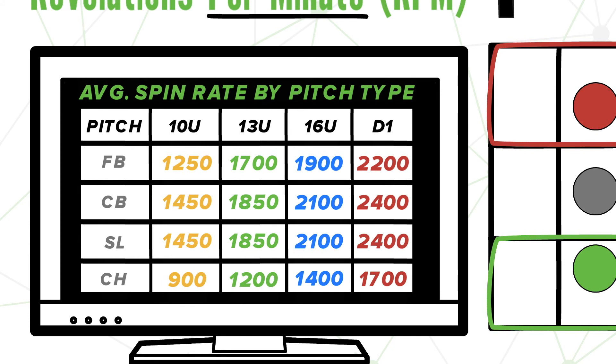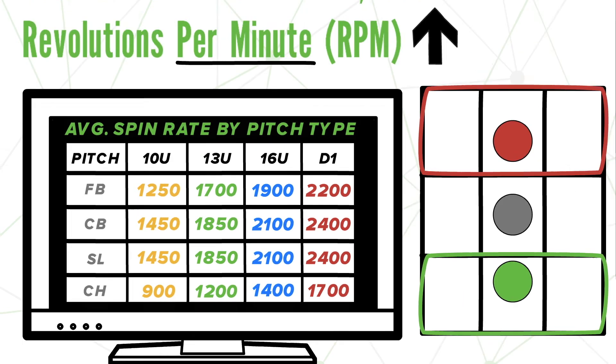If you're below average, pitch low in the zone. The main takeaway here is that your spin rate is a depiction of you, and with this knowledge, make sure you work your spin rate to your advantage when you're out on the mound.